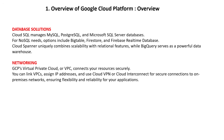GCP's Virtual Private Cloud, or VPC, connects your resources securely. You can link VPCs, assign IP addresses, and use Cloud VPN or Cloud Interconnect for secure connections to on-premises networks, ensuring flexibility and reliability for your applications.